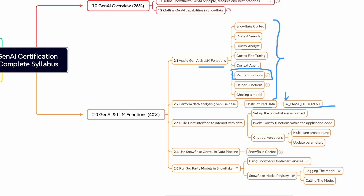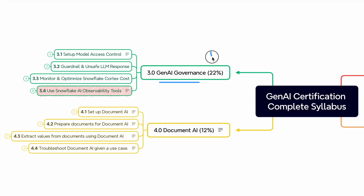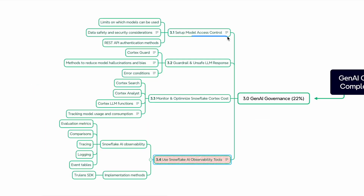If you practice Domain 2 well, you will be able to handle the confusing questions in the exam that often differ only by small syntax changes or slight variation in input and output. The governance domain has 22% weightage, meaning you can expect around 10 to 12 questions from it. This section focuses heavily on access control, especially the model allow list, because it directly impacts which models users can access and how model visibility is controlled through RBAC.